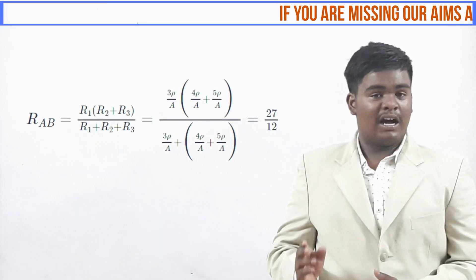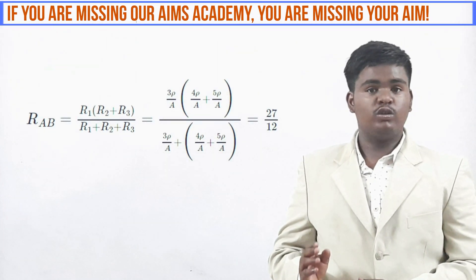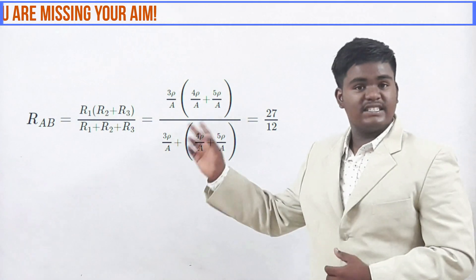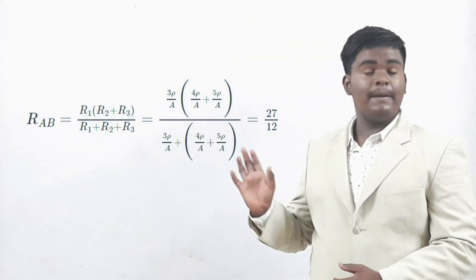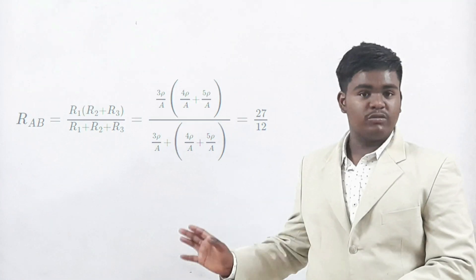Therefore, RAB is equal to R1 into R2 plus R3 by R1 plus R2 plus R3 which is displayed in the screen. If we substitute the value of R1, R2 and R3, we get RAB is equal to 27 by 12.